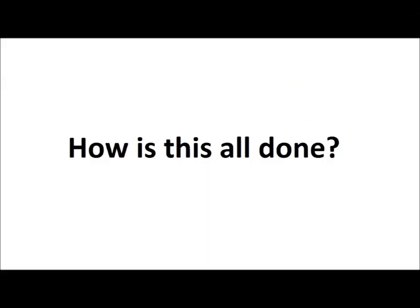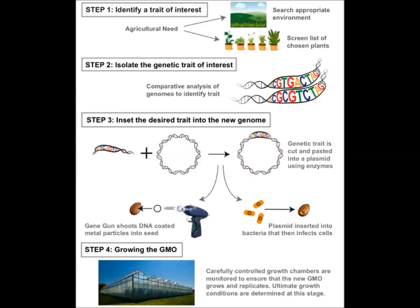So, how is this all done? The process is going to be broken down into four steps. First, identifying a trait of interest. Second, isolating the genetic trait of interest. Third, inserting the desired trait into the new genome.